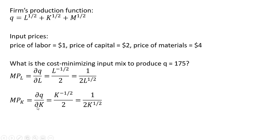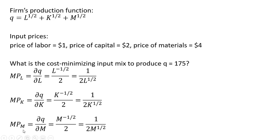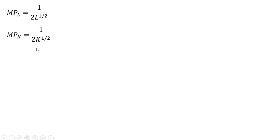The marginal product of capital is a similar partial derivative. We bring the one-half down in front and subtract one from the exponent on the K term. Using the rules of exponents, we move K to the negative one-half down into the denominator to get the marginal product of capital. Likewise, the marginal product of materials has a similar-looking function as the prior two. Just rewriting those last three marginal products.